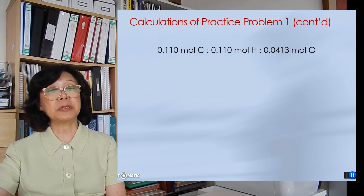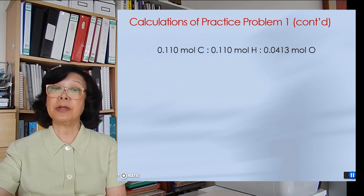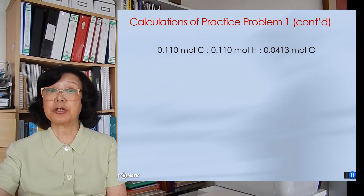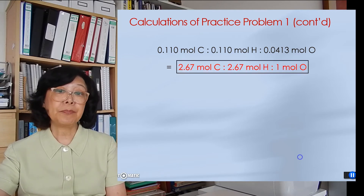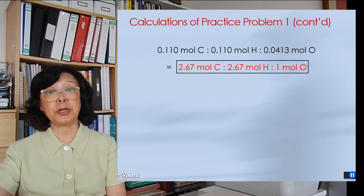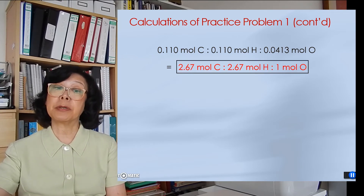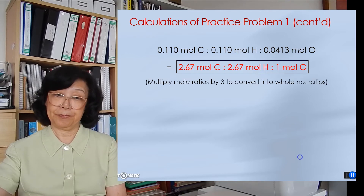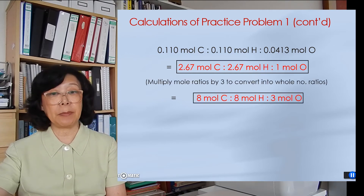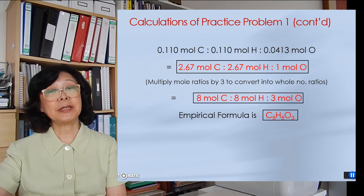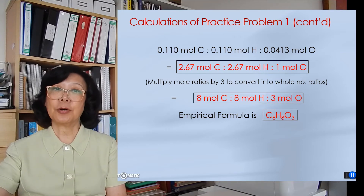Now we have the three different moles of carbon, hydrogen, and oxygen. If we divide by the smallest mole number of the three, which is 0.0413, we obtain mole ratios that are not whole numbers. To convert to whole number ratios, we multiply by 3. Now we have 8 moles of carbon, 8 moles of hydrogen, and 3 moles of oxygen. The empirical formula is C8H8O3.